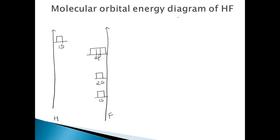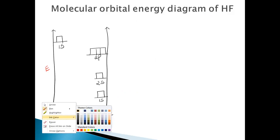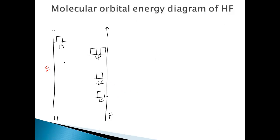When we try to draw the molecular orbital energy diagram of hydrogen fluoride, here I am placing hydrogen on one side and fluorine on the other, with the energy level on the vertical axis. For hydrogen it is only 1S1, and for fluorine it is 1S2, 2S2, and 2P5. So I have drawn all the orbitals here: fluorine 1S, 2S, 2P, and hydrogen 1S.